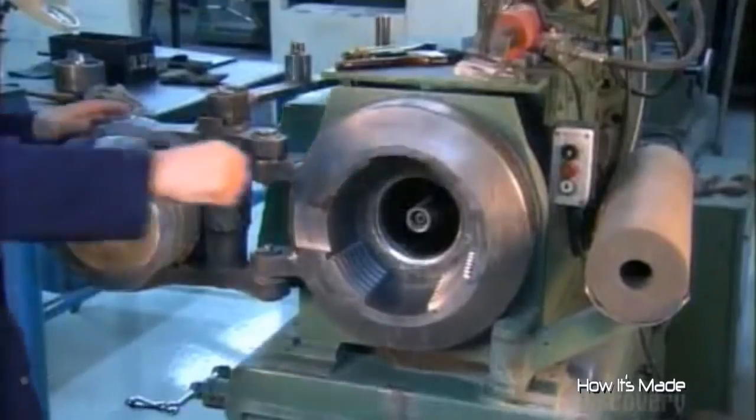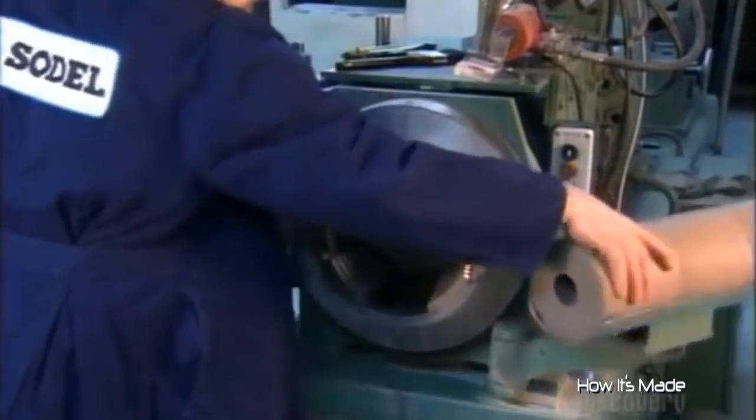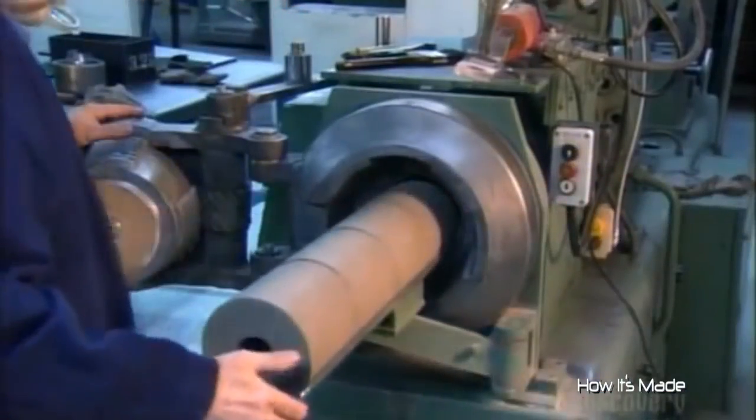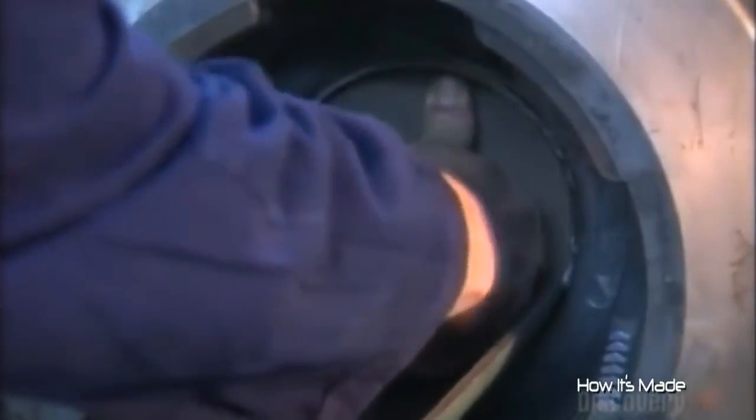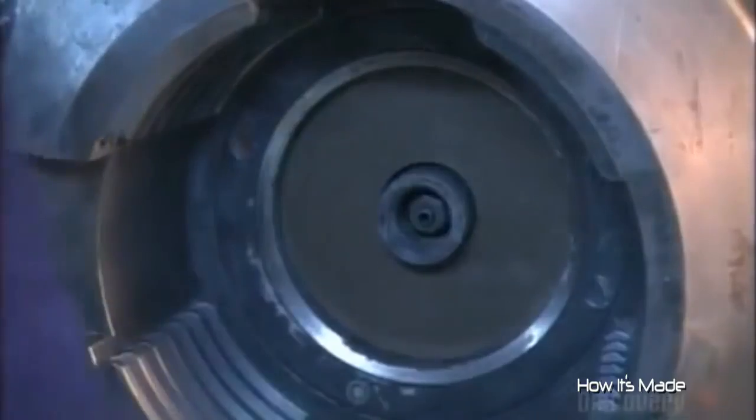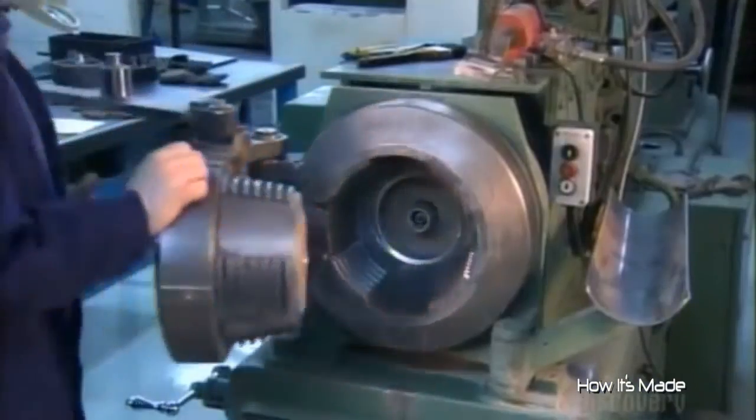Now to put the powder coating on the core wires. A worker loads four slugs into an extrusion press. It'll apply 120 tons of pressure on the slugs to shoot the powder through nozzles that'll coat the wires as they pass through the slugs hole.